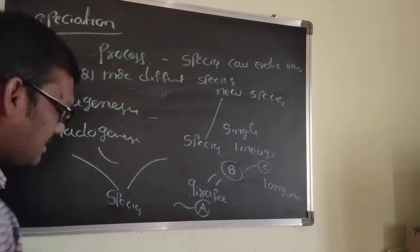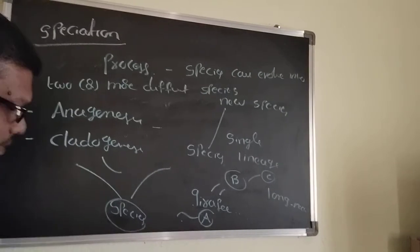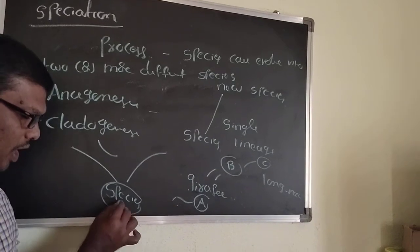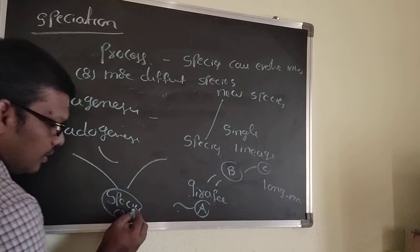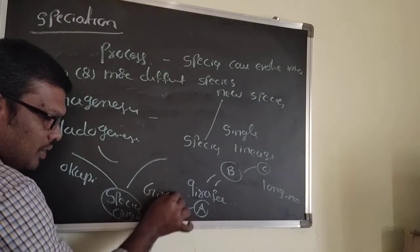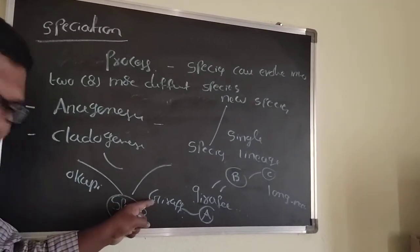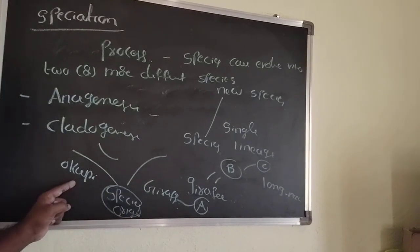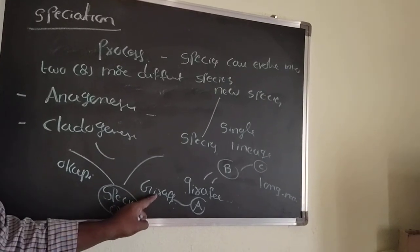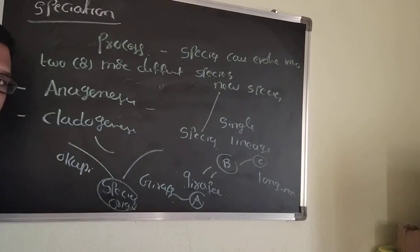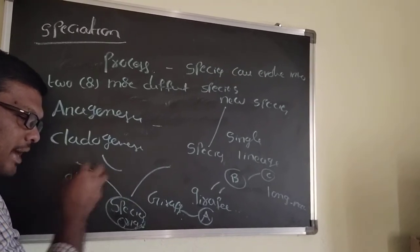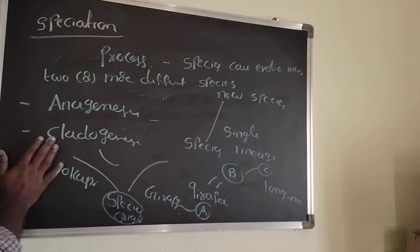For cladogenesis, one original species formed two different species: the okapi and the giraffe. The okapi is a forest zebra with no long neck, while the giraffe has a long neck. Both descended from the same original species — that is called cladogenesis.